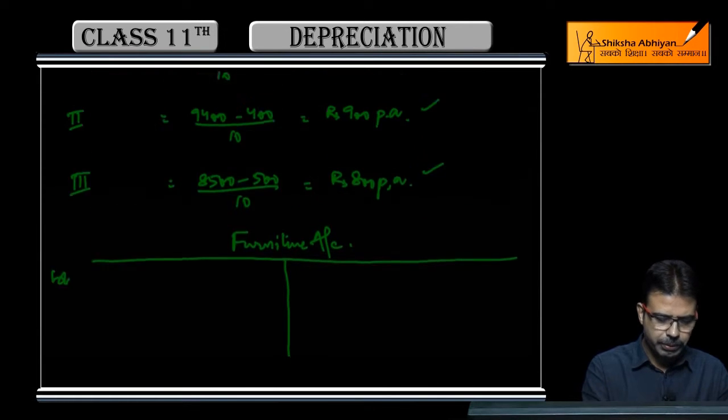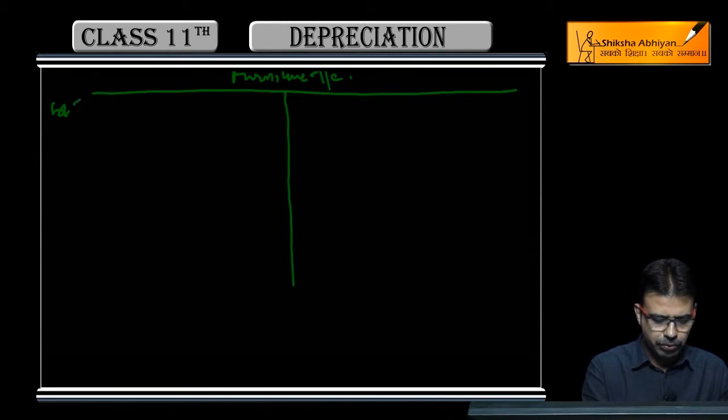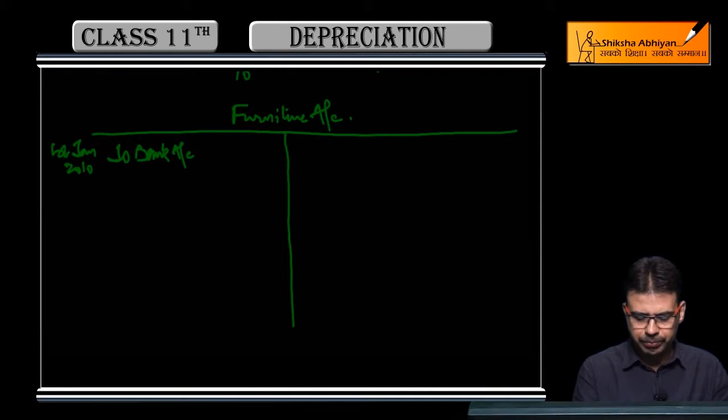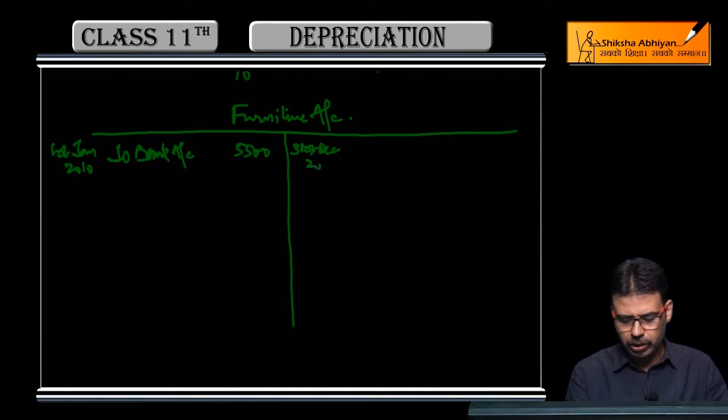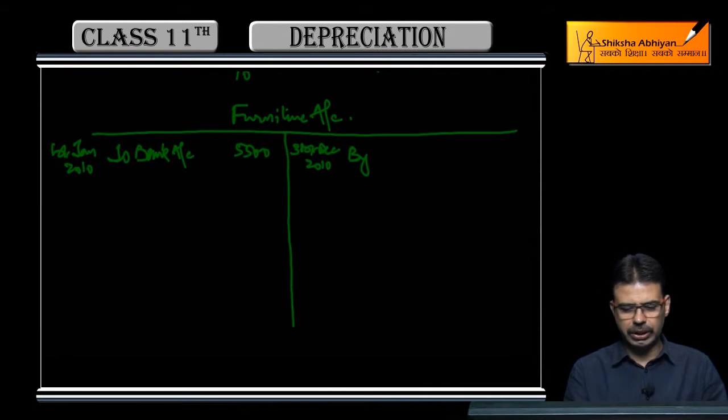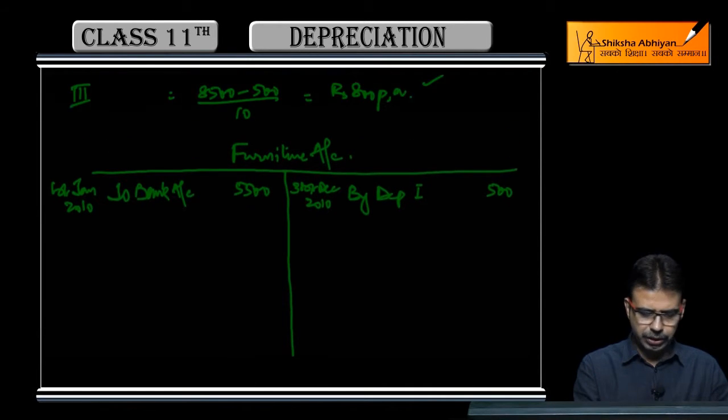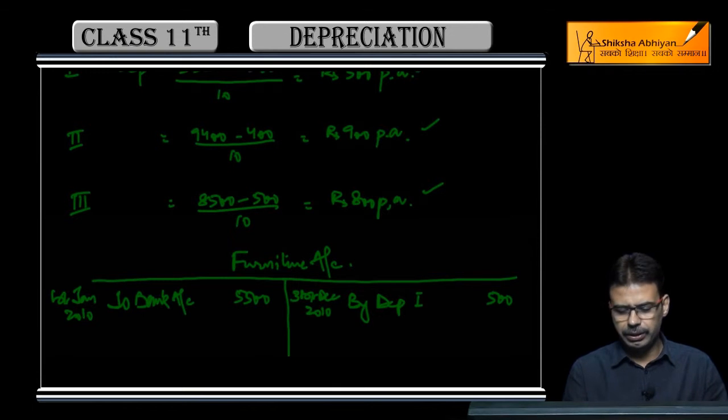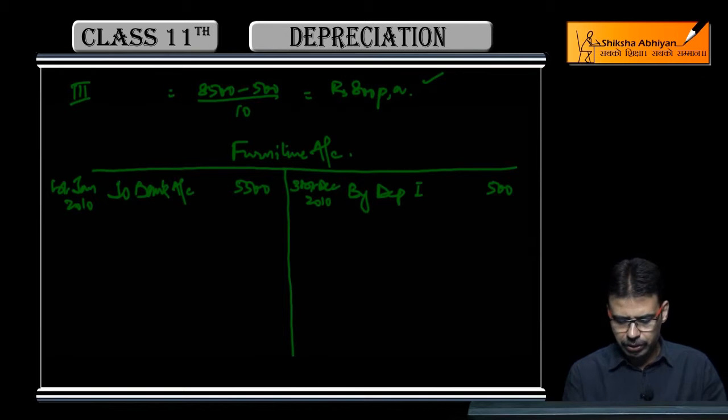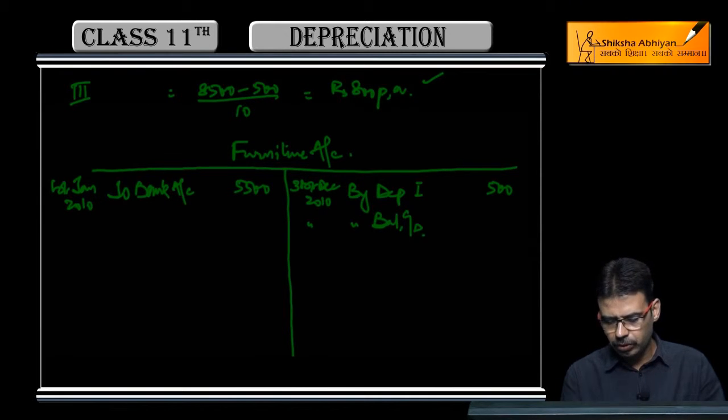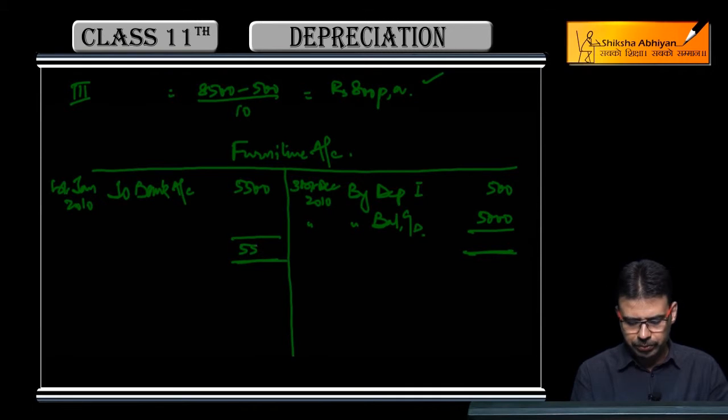First January 2010 to Bank Account—first we purchased Rs. 5,500. At year end, 31st December 2010, since we're following calendar year, on 31st we will balance carried down. From Rs. 5,500 minus Rs. 500 depreciation, the balance remaining is Rs. 5,000.